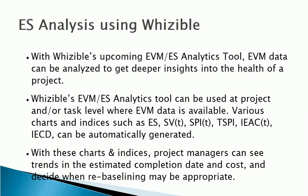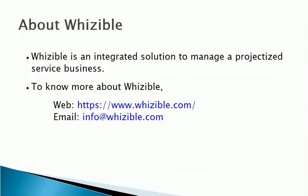Summary data such as periodic and cumulative ES, SVT, indicators such as SPIT and TSPI, estimates like IEAC(T) and IECD, and charts are available to be made part of periodic monitoring and reports. With these charts and indices, project managers can see trends in the estimated completion date and cost, and decide when re-baselining may be appropriate. Visible is an integrated solution to manage all aspects of running a projectized service business. To know more about Visible, please visit www.visible.com or email info@visible.com.